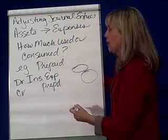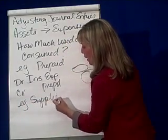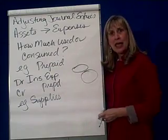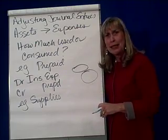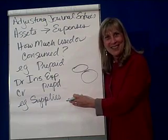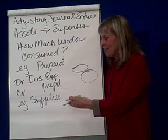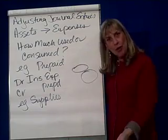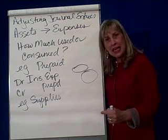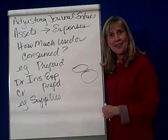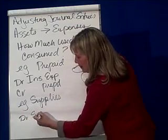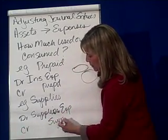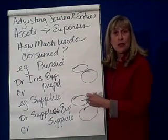Likewise, we could have an asset account called supplies. When we buy supplies, we debit supplies and credit cash or accounts payable, and we put them in the supply cabinet. But if you go to your supply cabinet, it's often empty — which means the supplies have been consumed or used. So I need to take an inventory of our supplies, figure out what's left, and the difference between what I bought and what's left must be what I've used. The entry for the amount used would be: debit supplies expense and credit supplies.